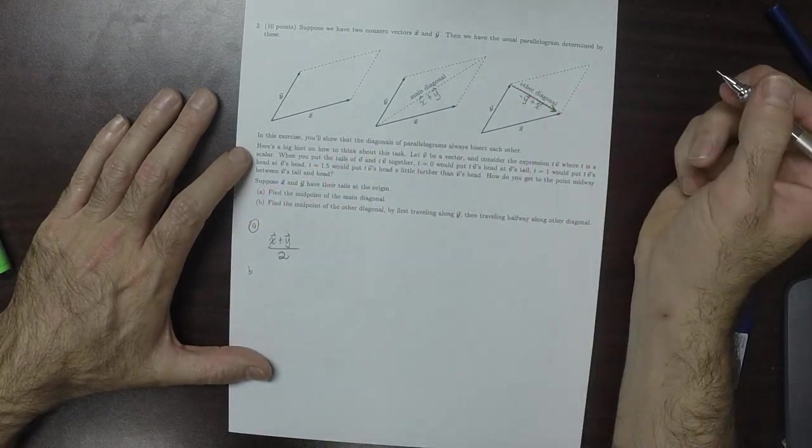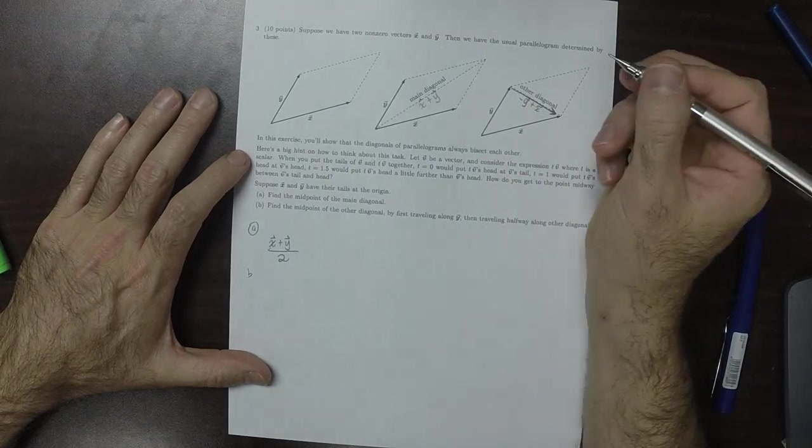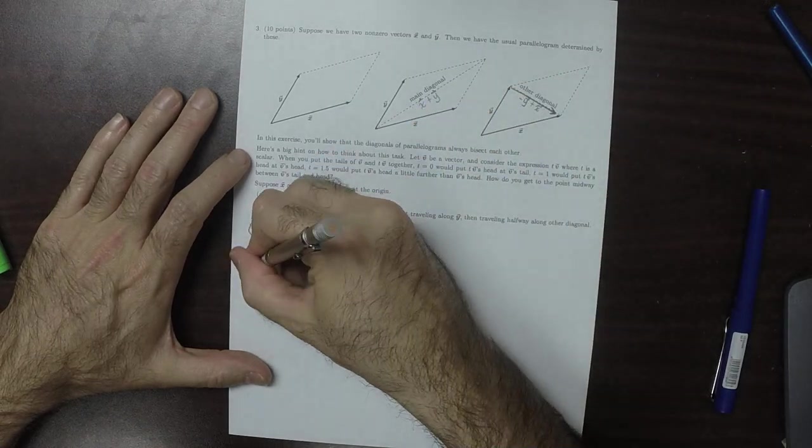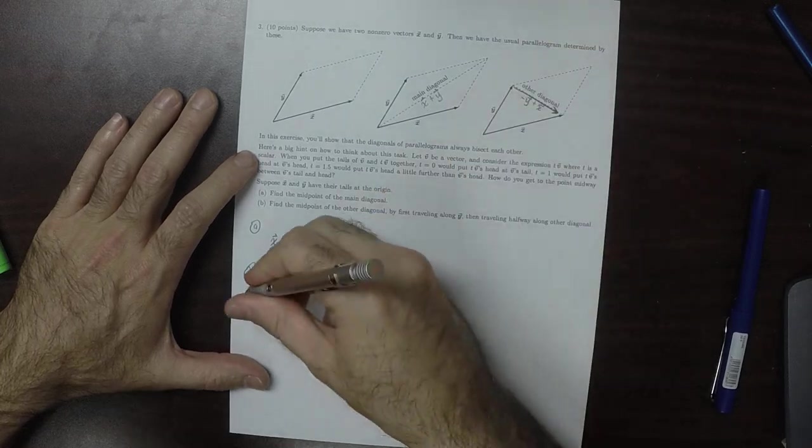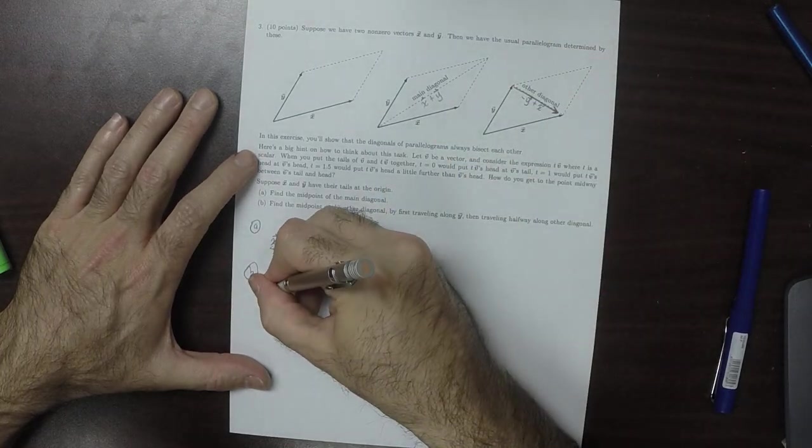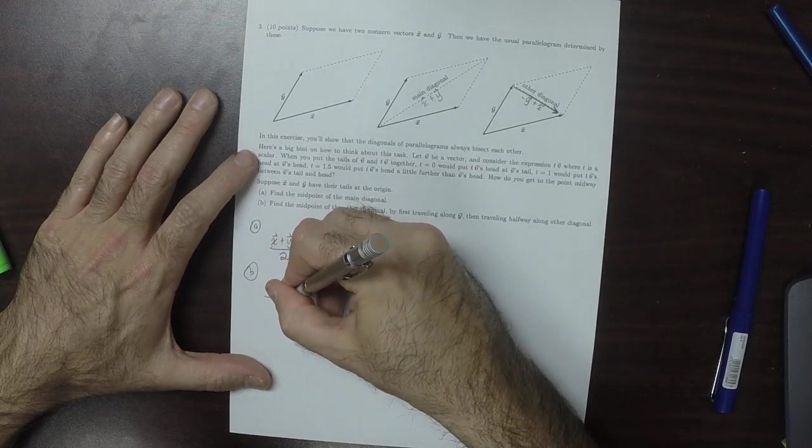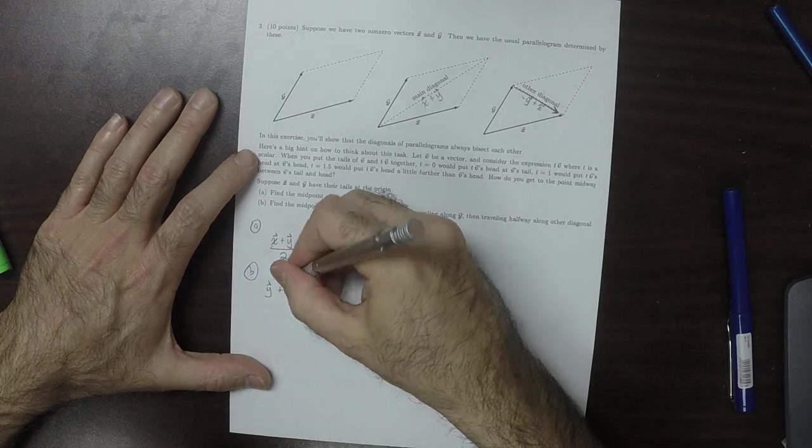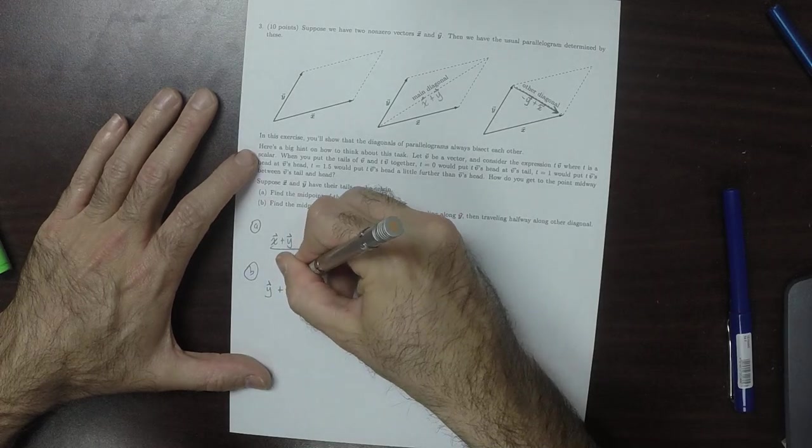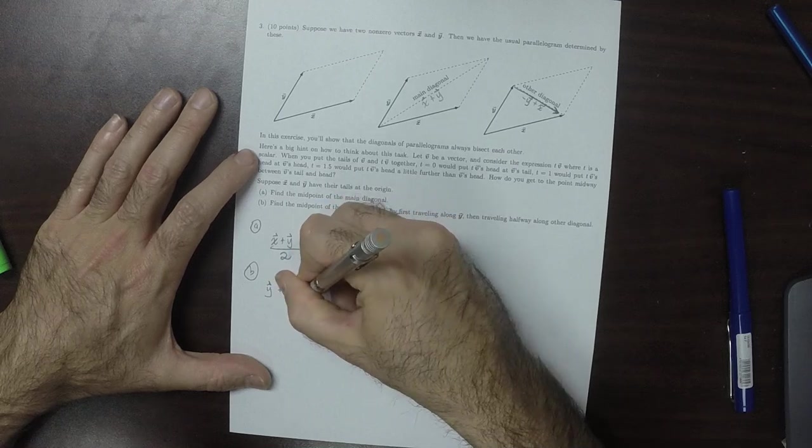And then part B, the midpoint of the other diagonal would be—you take y and then you add to it half of that one. So that'd be negative y plus x and then divide by 2.